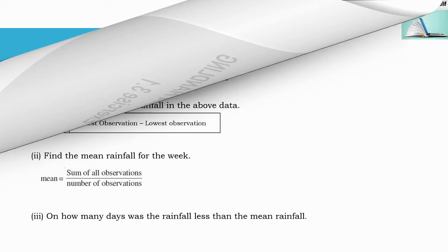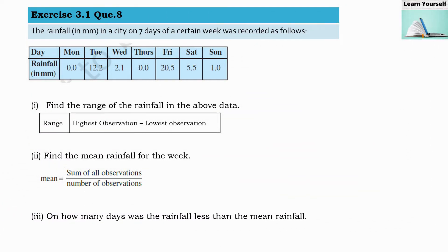Welcome to Learn Yourself, Exercise 3.1, Question Number 8. The rainfall in millimeters in a city on seven days of a certain week was recorded as follows. Here we have certain data and we have to answer some questions based on this data.